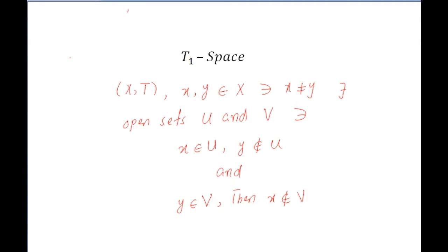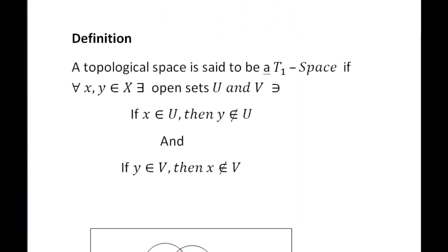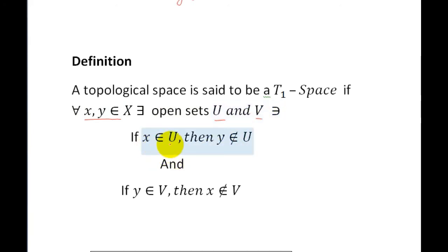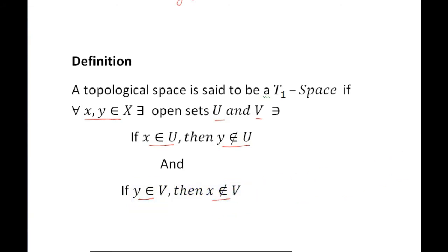Now the proper definition of T1 space: a topological space is said to be a T1 space if for all X, Y belonging to X, there exist open sets U and V such that if X belongs to U then Y does not belong to U, and if Y belongs to V then X does not belong to V.